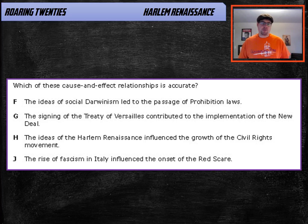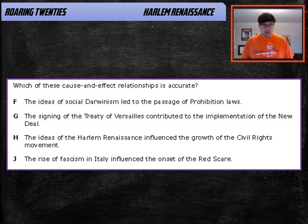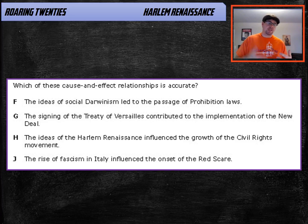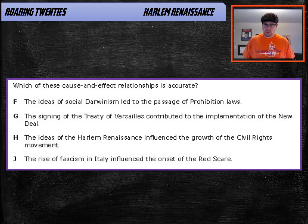Which of these cause-and-effect relationships is accurate? Answer choice H is correct: the ideas of the Harlem Renaissance influenced the growth of the civil rights movement. You could have known that answer by knowing what the Harlem Renaissance involved — African American culture specifically — and then looking at the other answer choices and noting they don't connect. For instance: social Darwinism and the passage of prohibition laws, the Treaty of Versailles and the implementation of the New Deal — these things don't connect to each other.